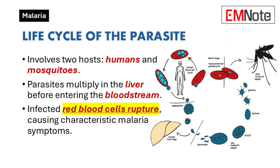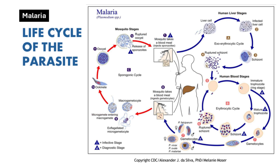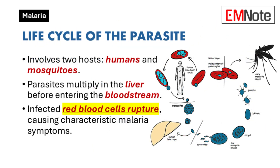Life Cycle of the Parasite: The Plasmodium life cycle involves two hosts — humans and mosquitoes. After a mosquito bite, the parasites travel to the liver to multiply before entering the bloodstream and infecting red blood cells. This cycle leads to the characteristic symptoms of malaria as infected red blood cells rupture.